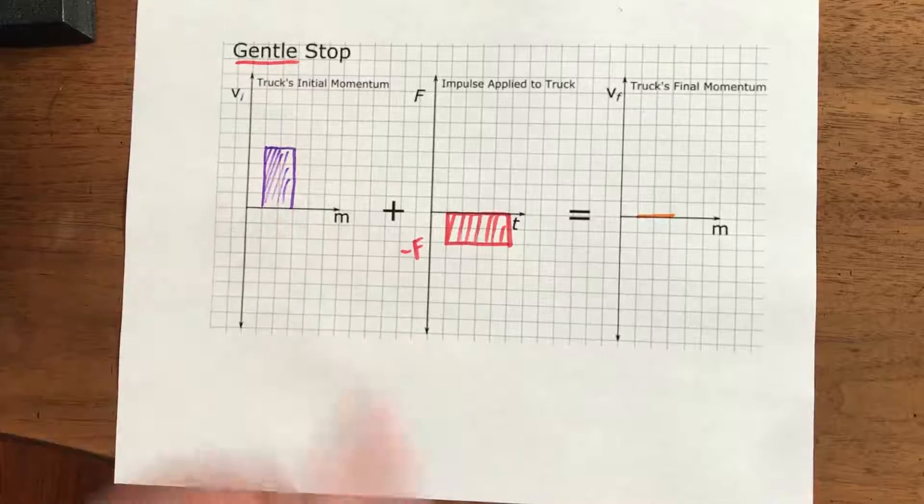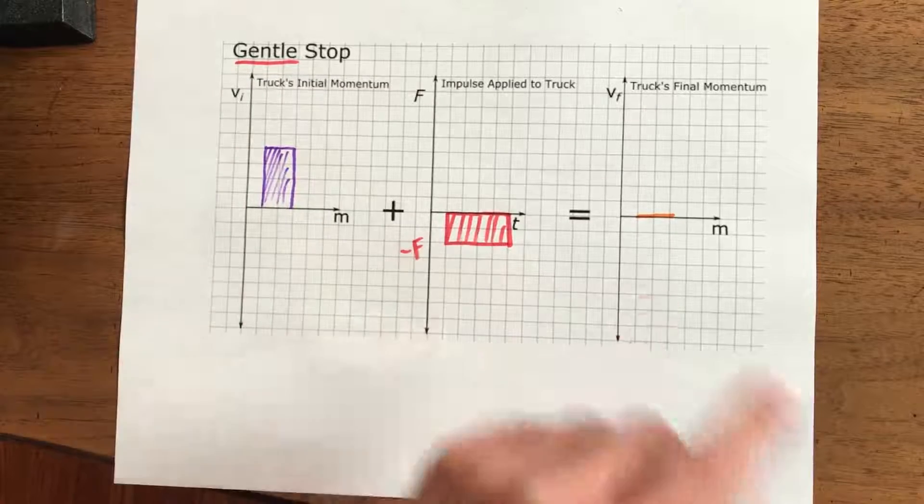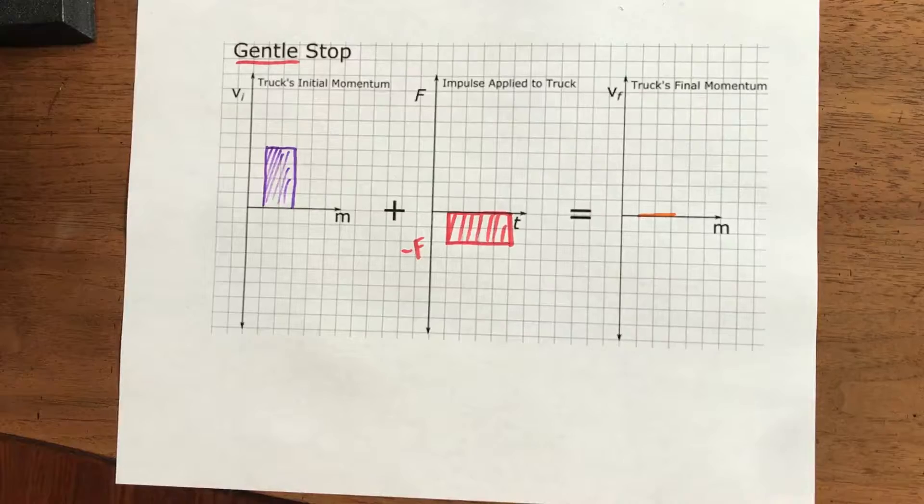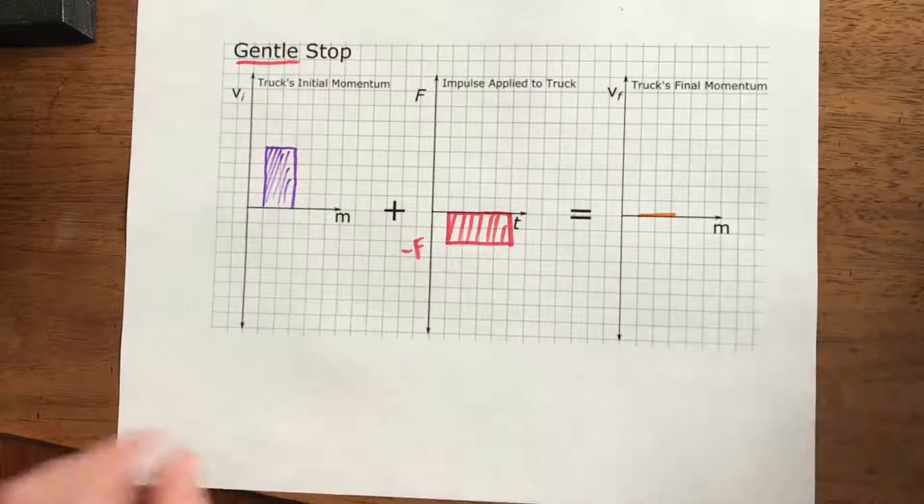So this could represent the impulse required to change that eight squares, eight squares to get us down to zero squares there.